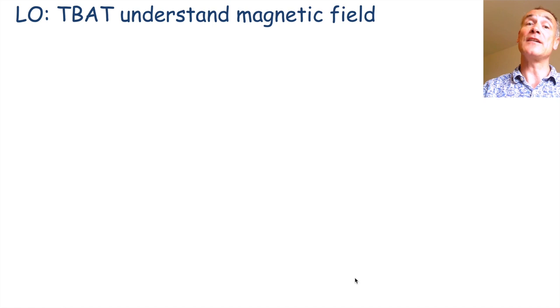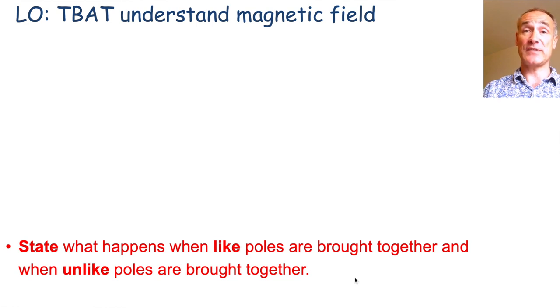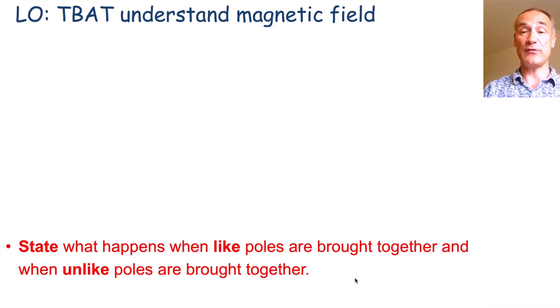This is the first lesson looking at magnetic fields. By the end of this lesson you should be able to state what happens when like poles are brought together — that means identical poles — and unlike poles are brought together.